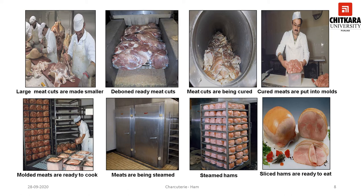Once the ham is cooked, it is rinsed with cold water for a minimum of 10 minutes. This washes away the drippings falling from the higher hams onto the lower ones. Now the hams can be chilled for 36 hours at 2°C. Then the nets come off and packaging starts. Whole, sliced, or ham steaks can be packed and shipped.